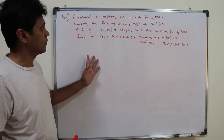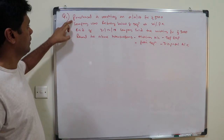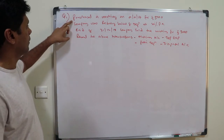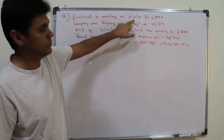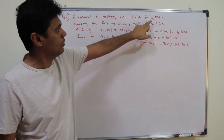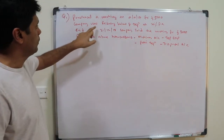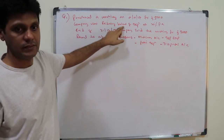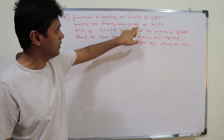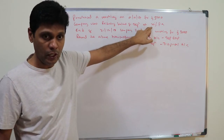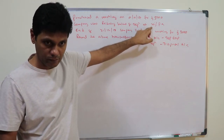We will discuss this question. A company purchased machinery on 1st January 2017 for five thousand pounds. The company uses the reducing balance method of depreciation at the rate of 20 percent per annum.